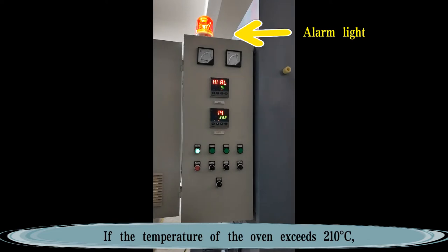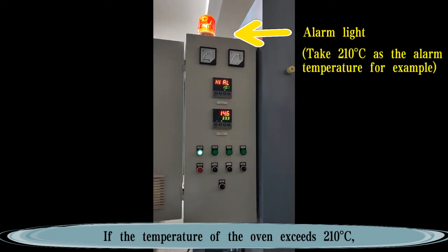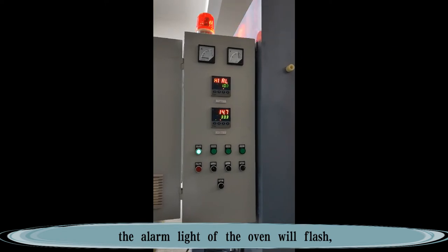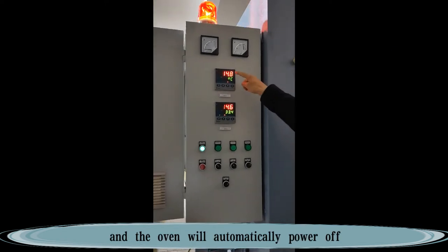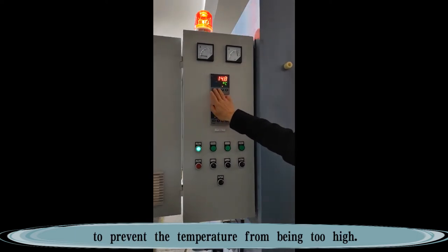If the temperature of the oven exceeds 210 degrees Celsius, the alarm light of the oven will flash and the oven will automatically power off to prevent the temperature from being too high.